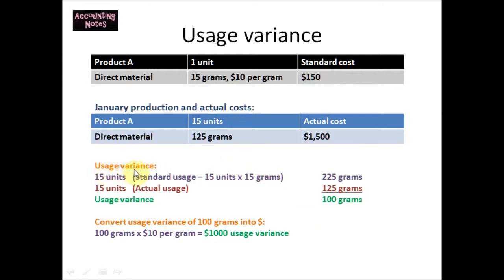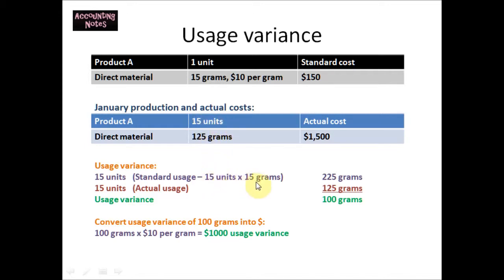In order to calculate the usage variance, let's look at what the 15 units should have used in terms of grams. According to the standard costing, in order to produce one unit it takes 15 grams, and in January they produced 15 units. So we calculate the standard usage: 15 units times 15 grams, because it takes 15 grams to produce one unit. So 15 times 15 grams gives 225 grams.